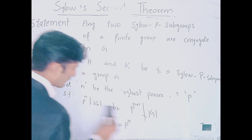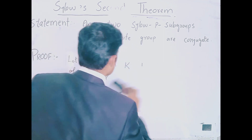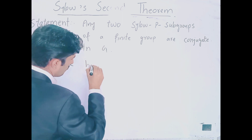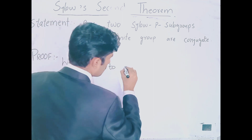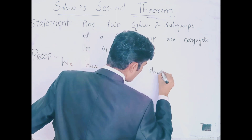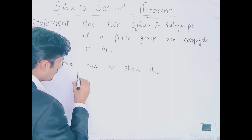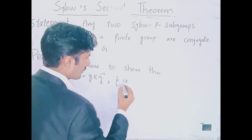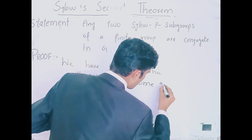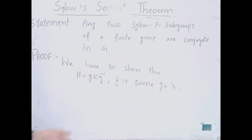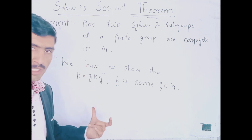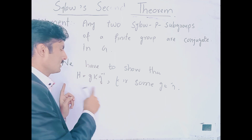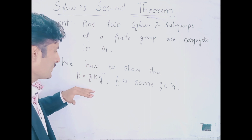ہم prove کیا کرنا چاہتے ہیں؟ We have to show that H is equal to gKg⁻¹ for some small g belonging to capital G. یعنی ہم یہ condition satisfy کرانی ہے جو conjugate subgroup کی condition ہے — H اور K آپس میں conjugate ہوں گے۔